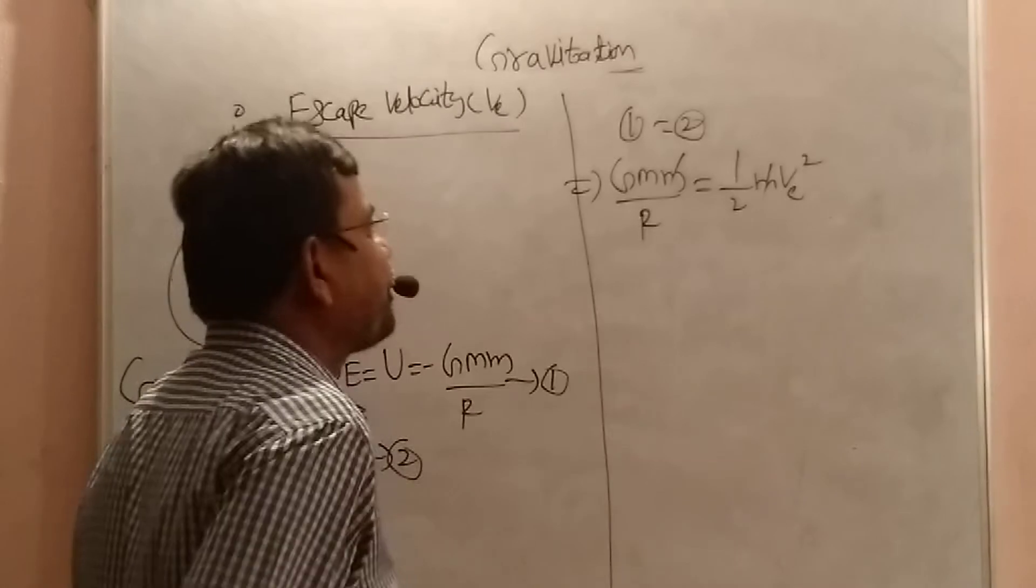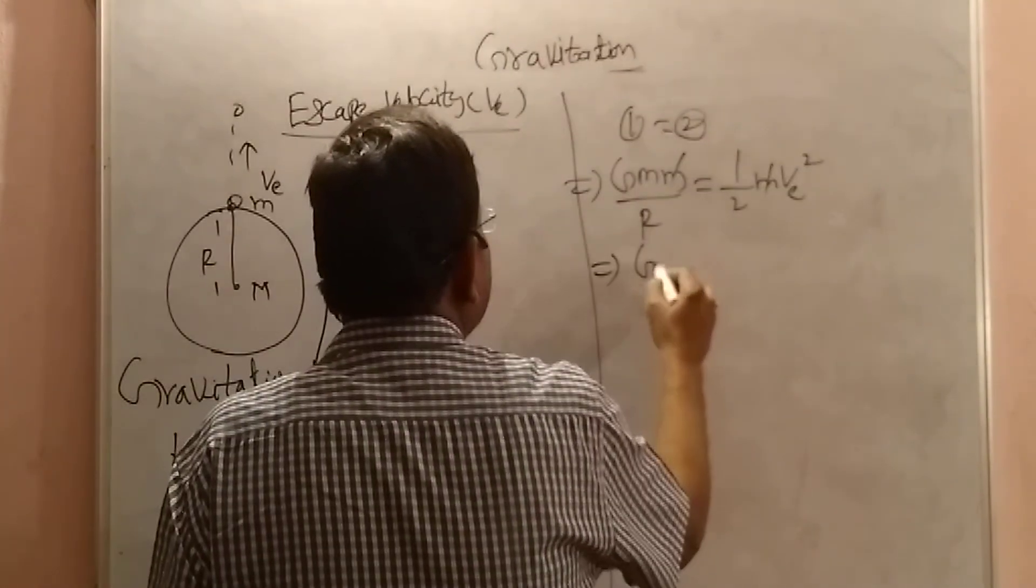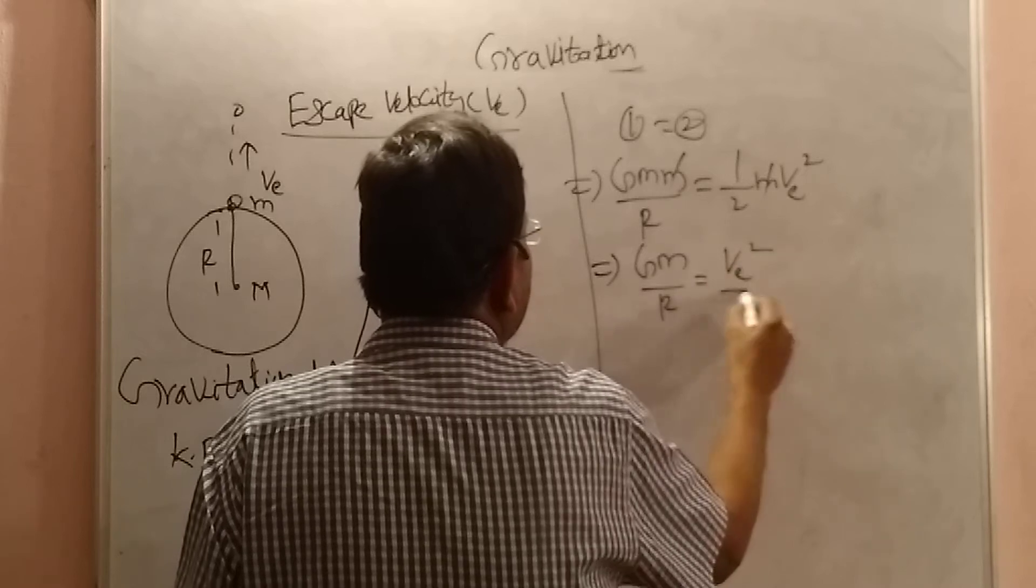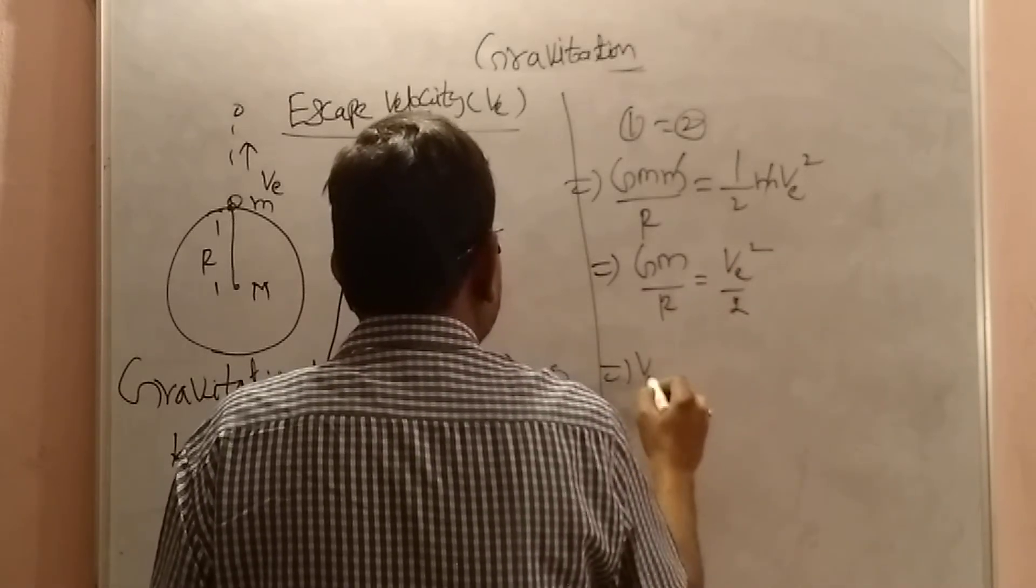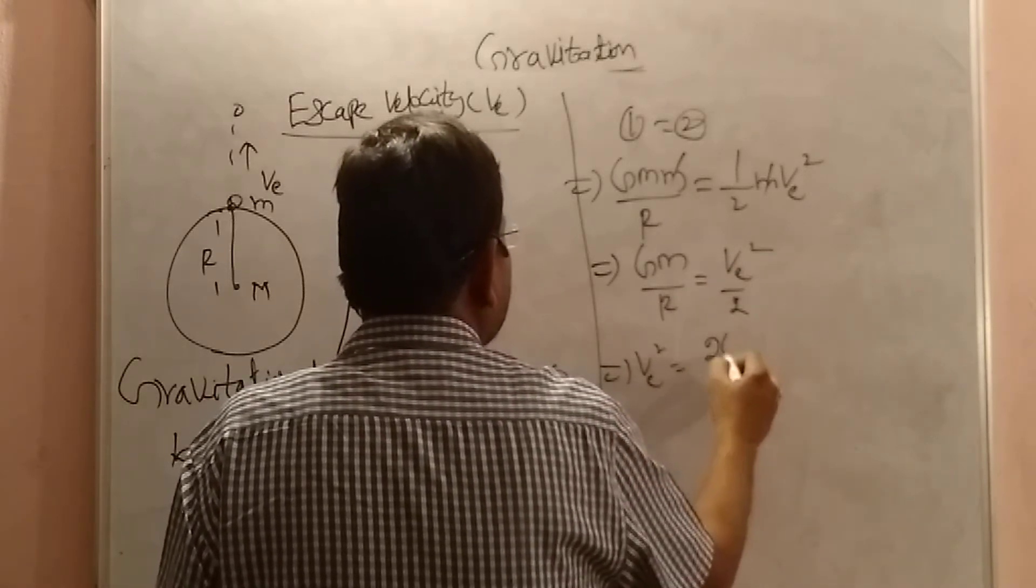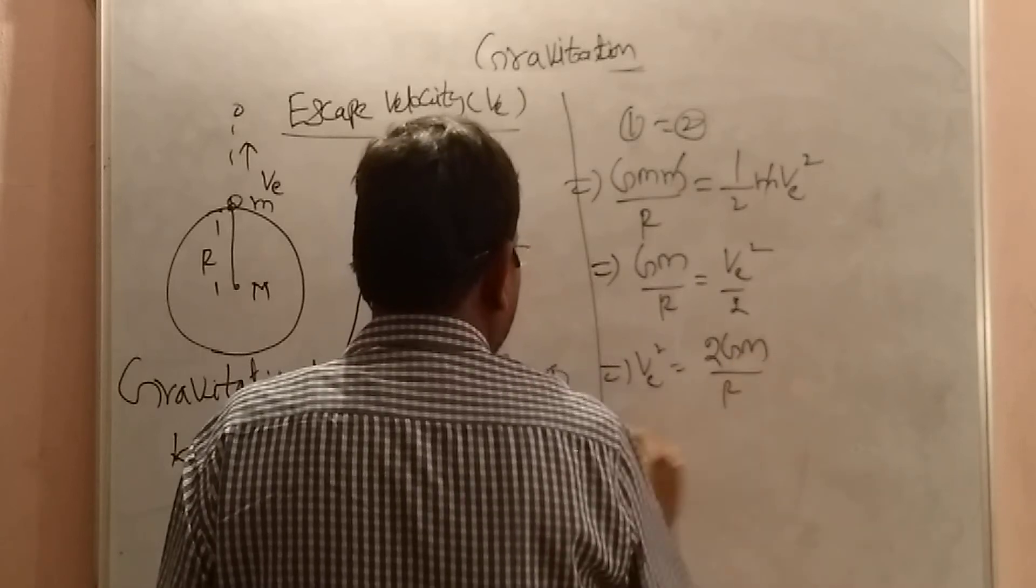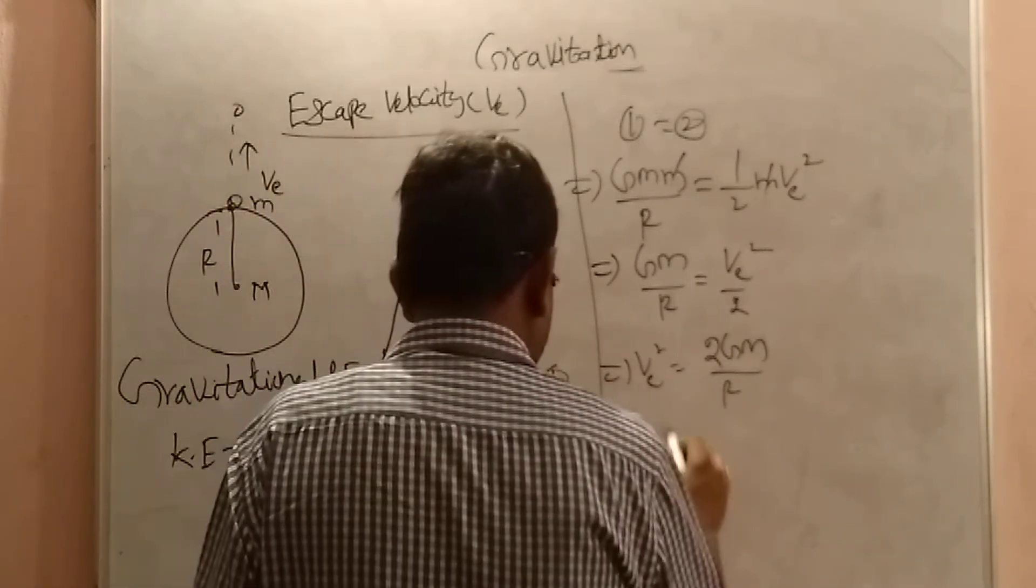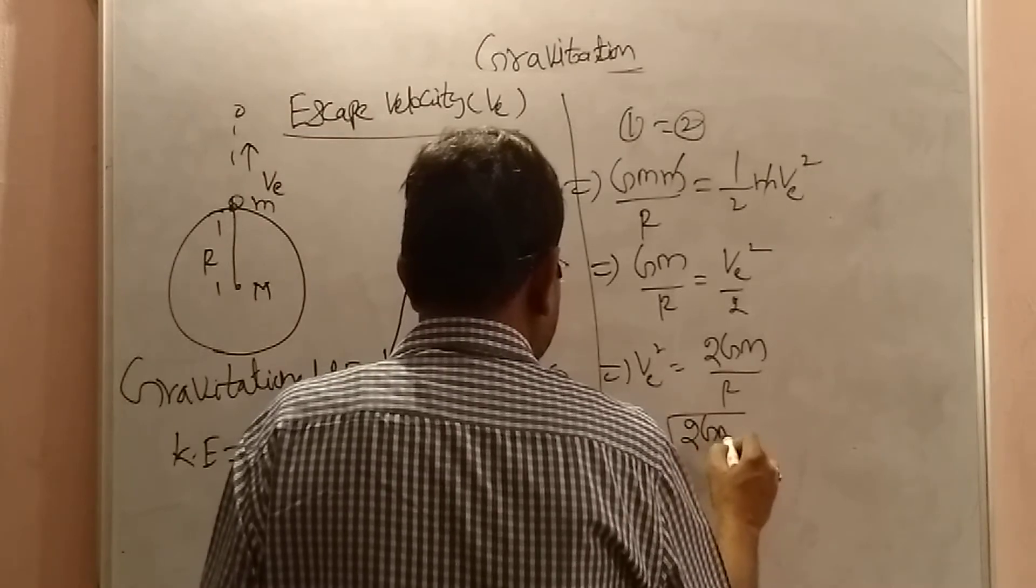This small m cancels. Now, GM by r, that is equal to v square by 2. Otherwise, v square equal to 2 into GM by r. I want v, so v equals square root of 2 into GM by r.